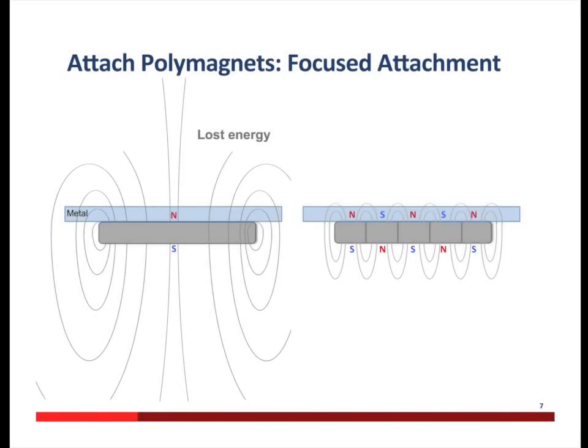Now let's add a piece of metal to each of these two magnets. The conventional magnet on the left won't hold on that well to the piece of metal because a limited amount of the magnetic field will stay in the metal. In contrast, much of the polymagnet's field will stay in the piece of metal and will hold on much stronger. Likewise, the magnet won't attract from as far a distance as the conventional magnet. Both the stronger attach and the decreased reach are because the field is focused right up front of the polymagnet because of the pattern of north and south on it.